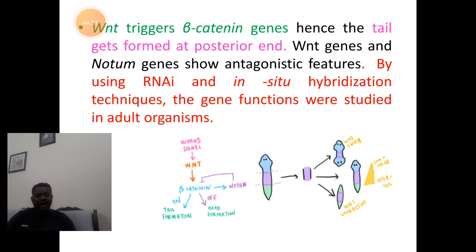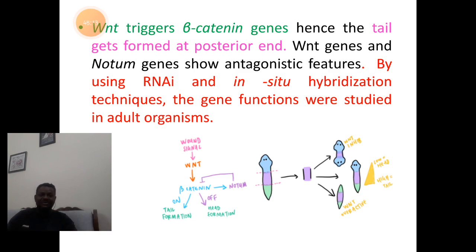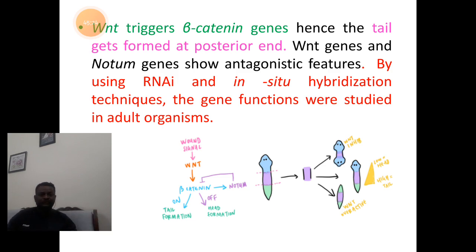The concept of RNAi and hybridization technique is responsible for understanding the function of those approximately 6,000 genes. It clearly indicates that WNT genes and beta-catenin genes are responsible for the formation of the tail, whereas notum genes and ERG genes are responsible for the formation of the head region in adults.